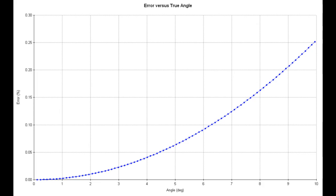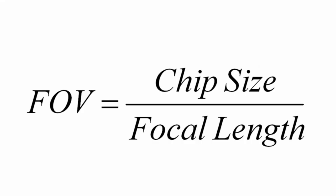The error you get by using this simpler equation is plotted here. Notice that you get a quarter of a percent of error when your field of view is 10 degrees. The error is much smaller for smaller angles. For telescopic field of views, it makes sense to use the simpler formula.